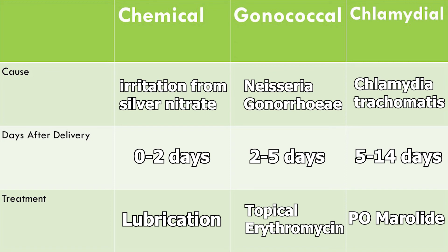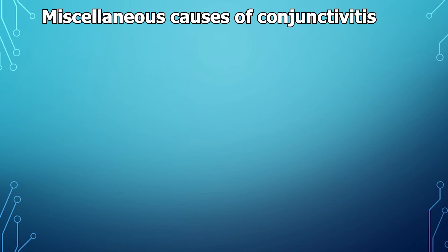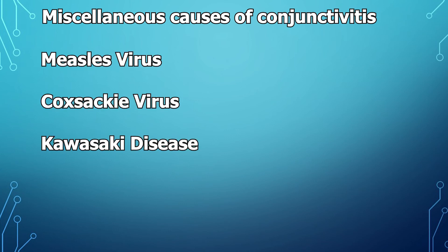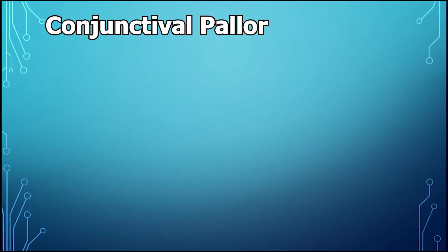One other organism that can cause neonatal conjunctivitis is herpes simplex virus, which can occur anywhere from one to six weeks after birth. It's not very commonly tested, but it is in First Aid. For miscellaneous causes of conjunctivitis, other associations include measles virus, coxsackievirus, Kawasaki disease, and HSV-1, which causes a keratoconjunctivitis.